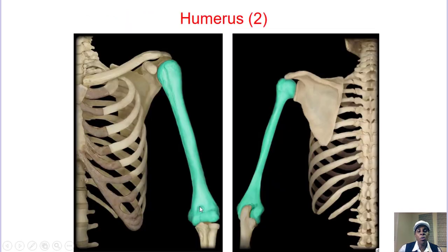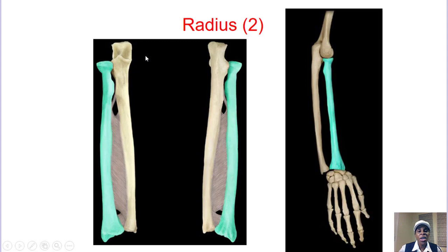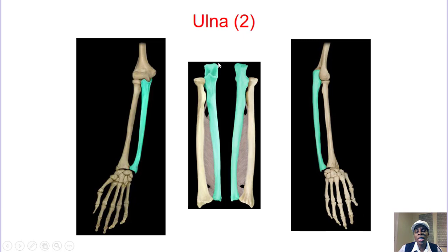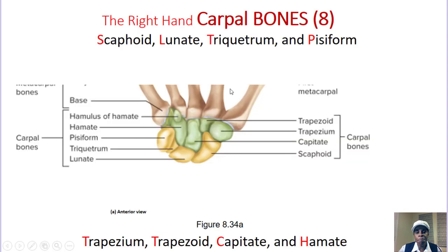Then the humerus — it's humorous: when somebody tickles you, they put their hand under your humerus. The radius has a circular part on its proximal end — radius being half the diameter of the circle. The ulna looks like a U. Then the carpal bones — remember carpal tunnel syndrome — we have eight of them.